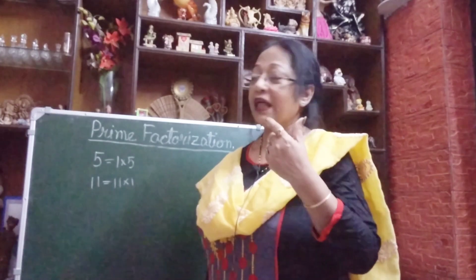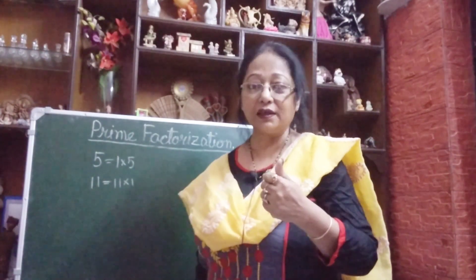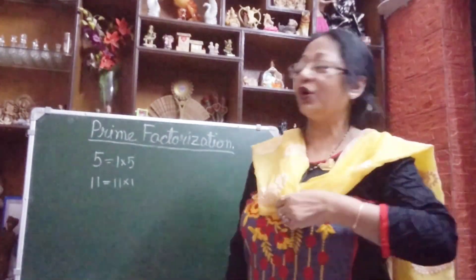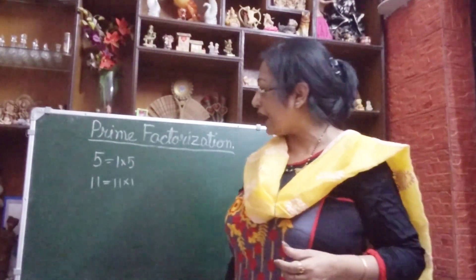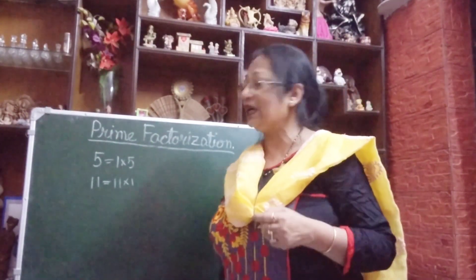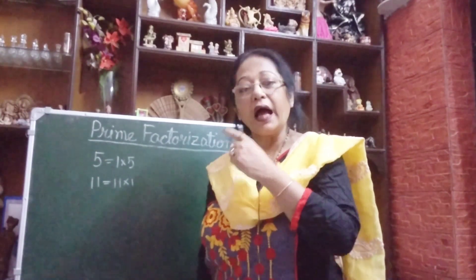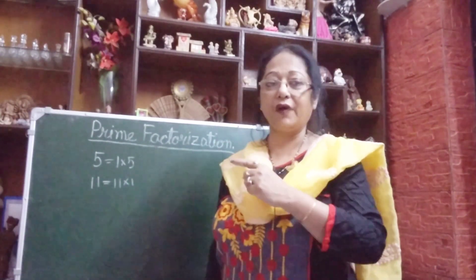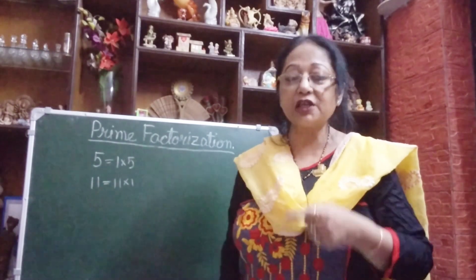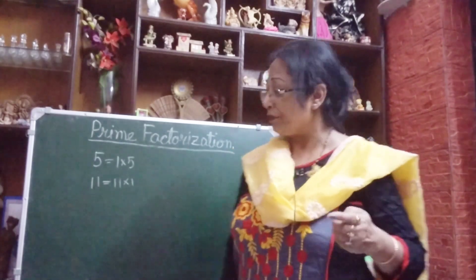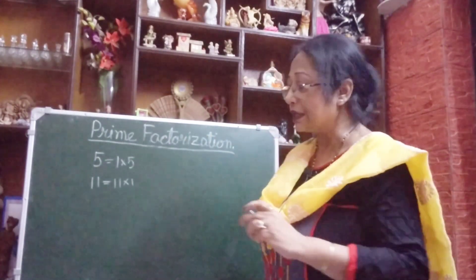I told you about factors and multiples — how you will understand: multiples are like the father and factors are like the son or daughter, means the father's children. So here you see 11 and 5 — these are bigger, these are multiples of 1 and 5. And 1 and 5, they are the factors of 5, and 1 and 11 are factors of 11. These are the prime numbers.